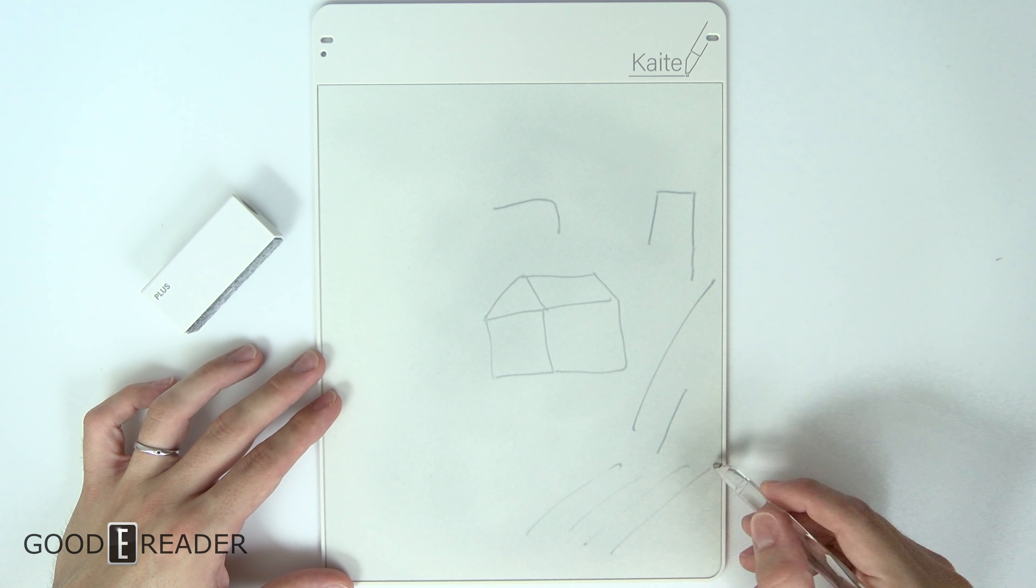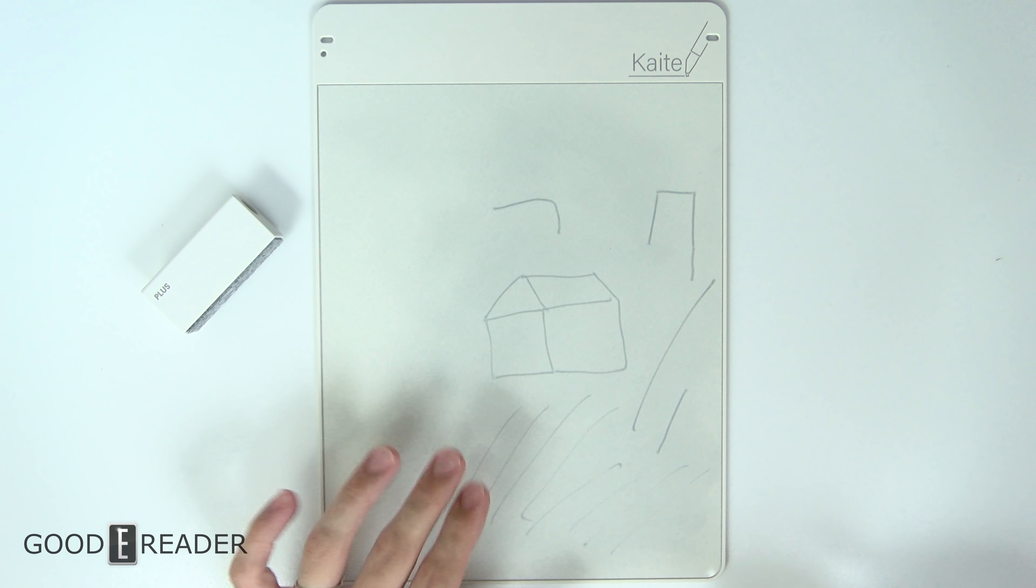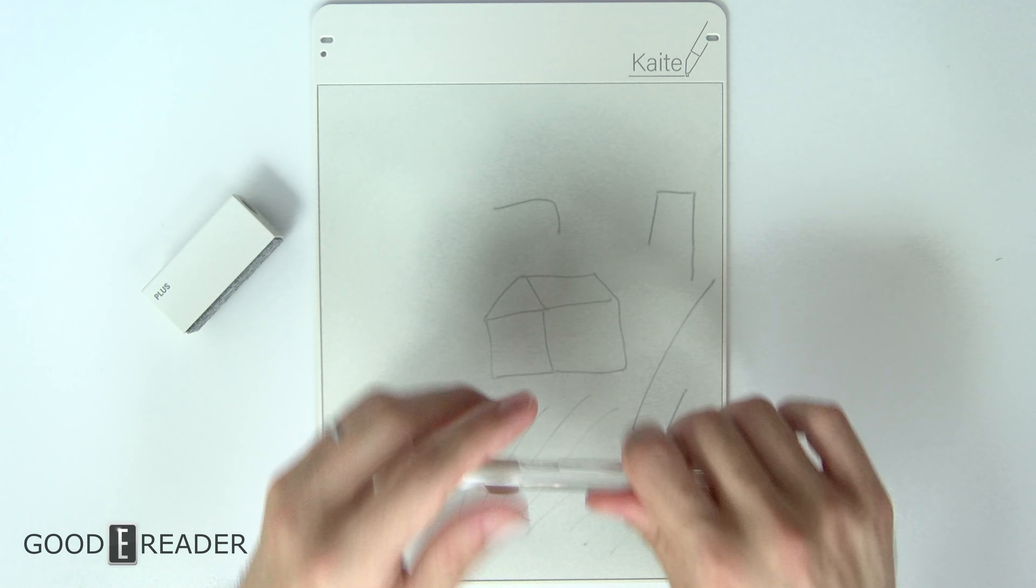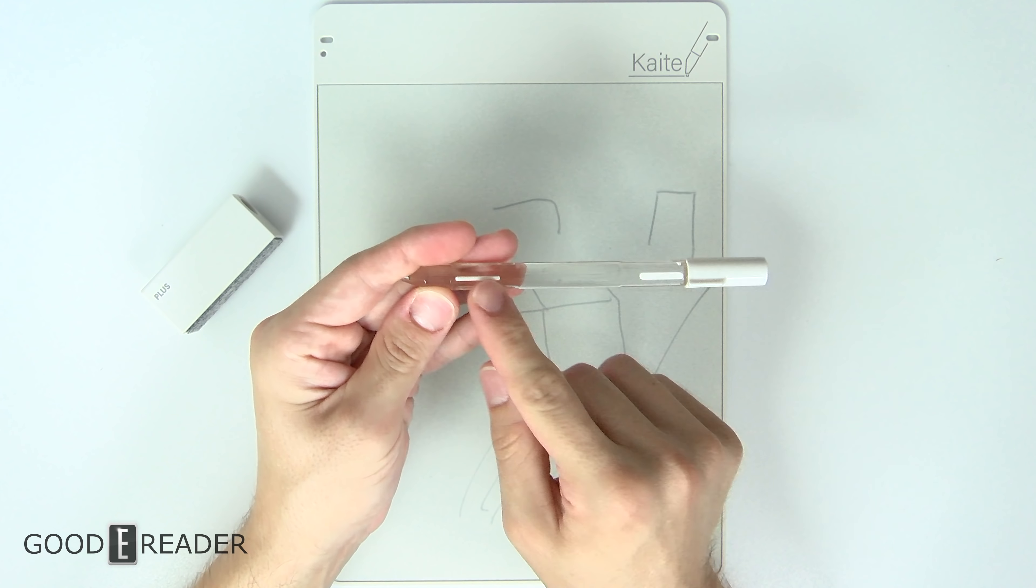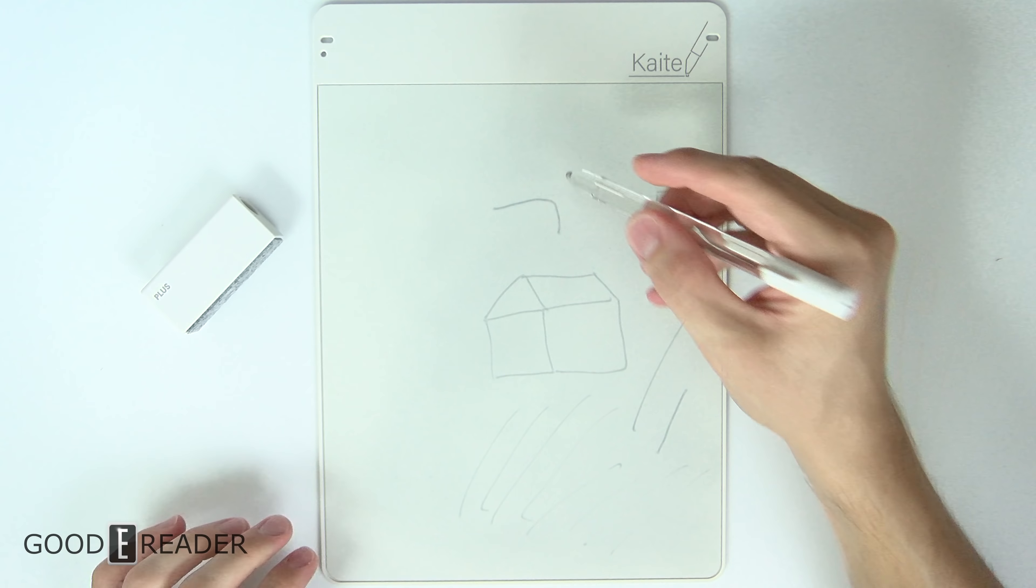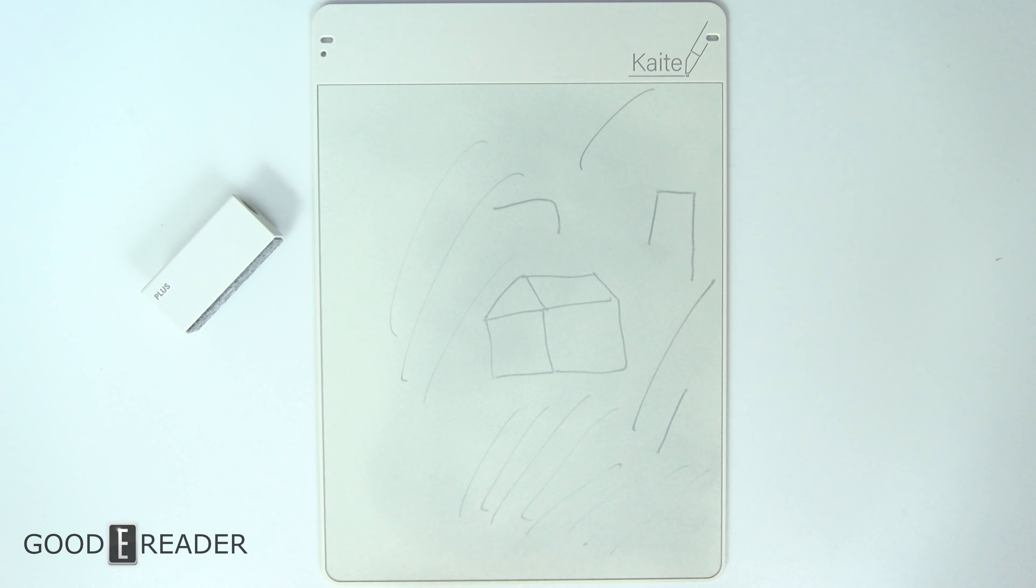Also if you hold it on an angle, you can increase the amount of opacity, basically making it more grey. Also, you can flip the pen over. This particular one has two pen sizes, thick and thin. So you can make even thinner lines. So the detail you can actually make is quite impressive.